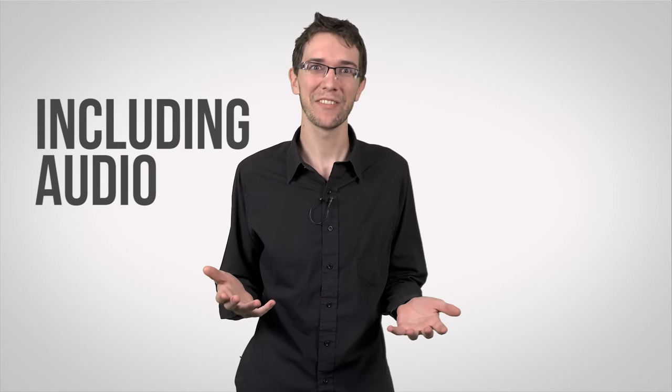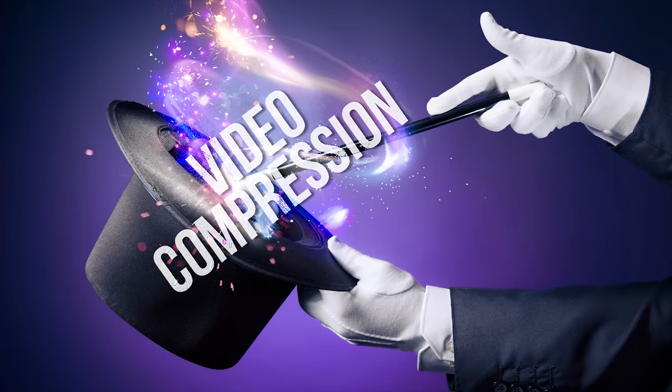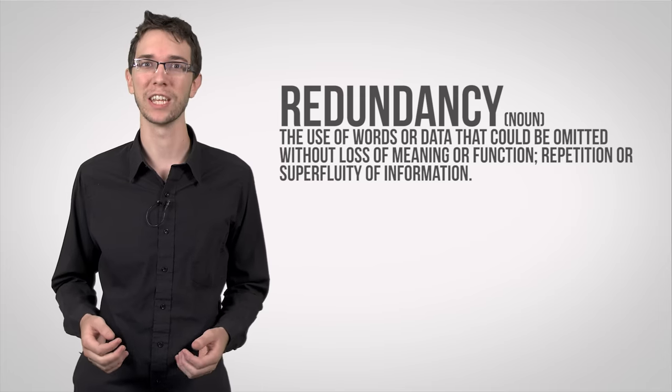Fortunately, a 5-minute high-definition YouTube video is not 51 gigabytes. It's in fact more like 72 megabytes. That's like 700 times smaller. How did they do that? That's the magic of video compression, which works mostly by minimizing redundancy in the video data.